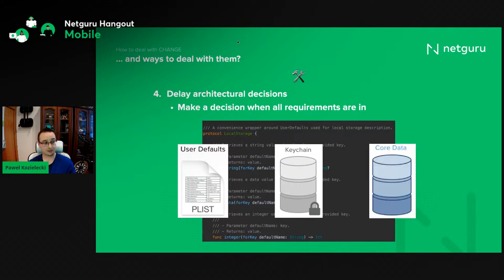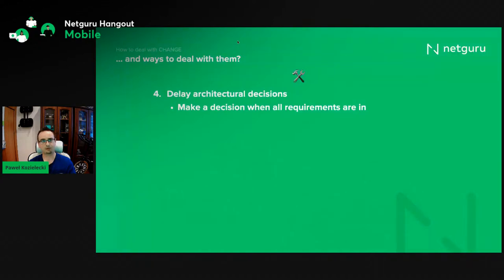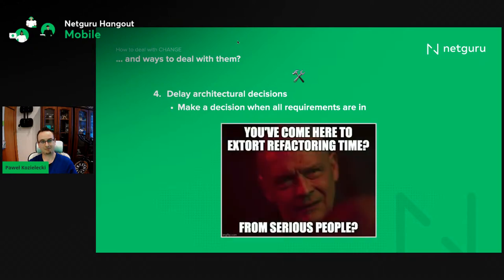We can even use Core Data if we want to. Basically, if we've done the wrapping right and have the proper protocol, the implementation can be replaced at any time. Such a change, even though it may sound profound, should be easy and not take long — because we won't be forced to ask for an additional sprint to replace all those instances of UserDefaults across the application. And trust me, asking the client for additional time to refactor can be a pretty difficult negotiation.